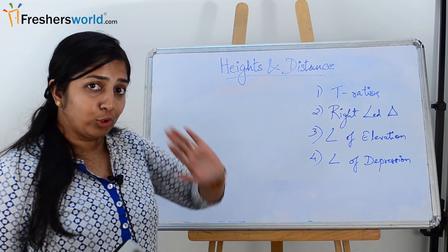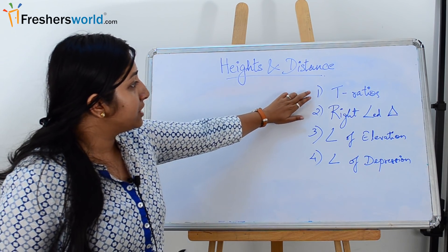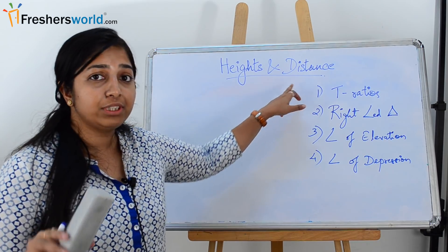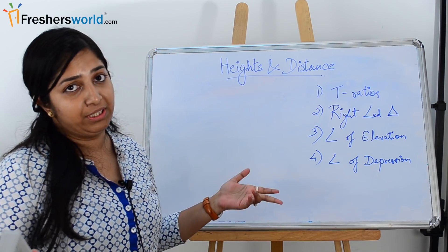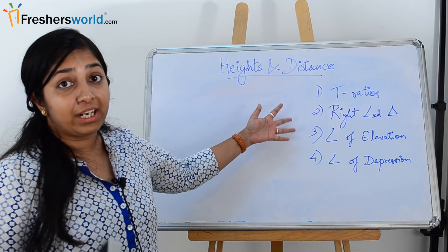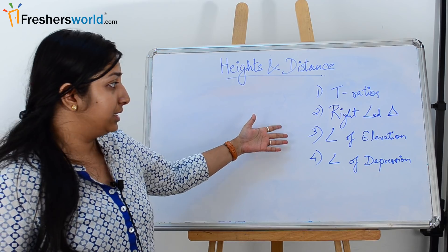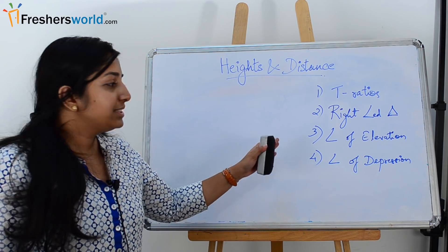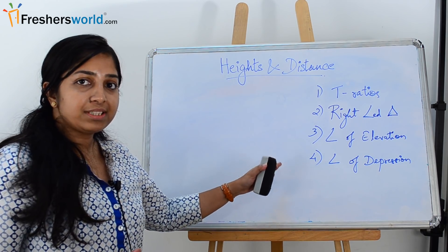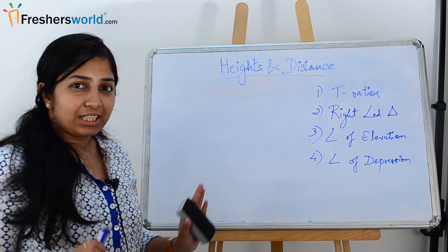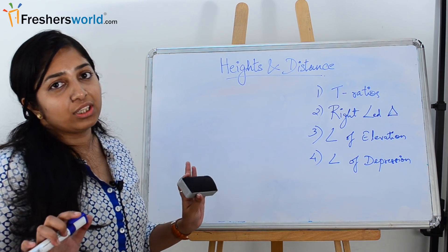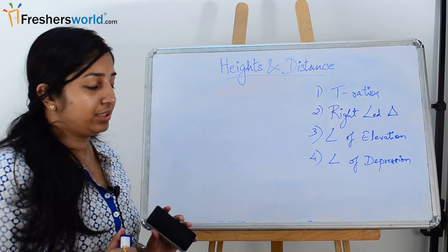Those four terms are: first, the T-ratios or trigonometric ratios; second, the concept of right angle triangle; third, angle of elevation; and fourth, angle of depression. Let's start with the T-ratios, or what we call the trigonometric ratios.